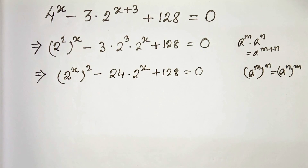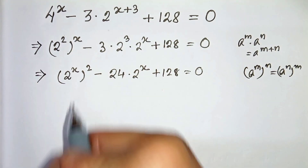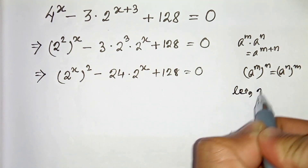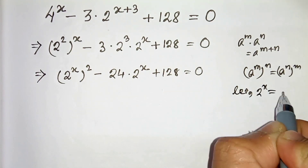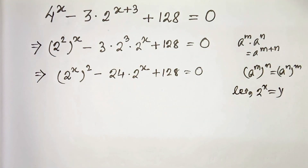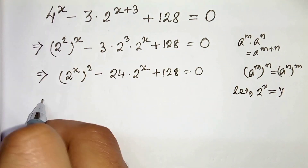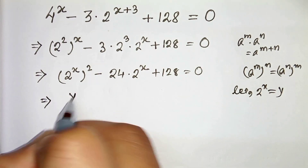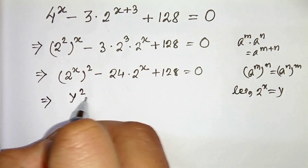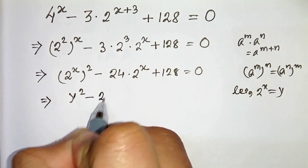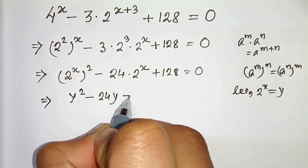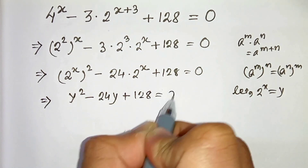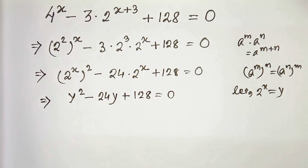Now we will replace 2 to the power x by y. So let 2 to the power x equal y. Therefore y squared minus 24y plus 128 equals 0.